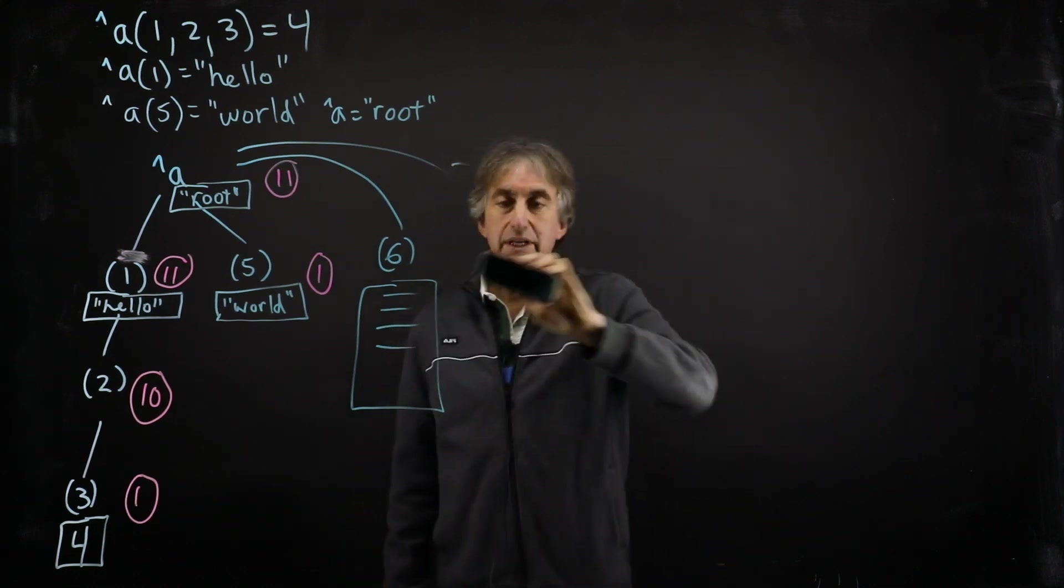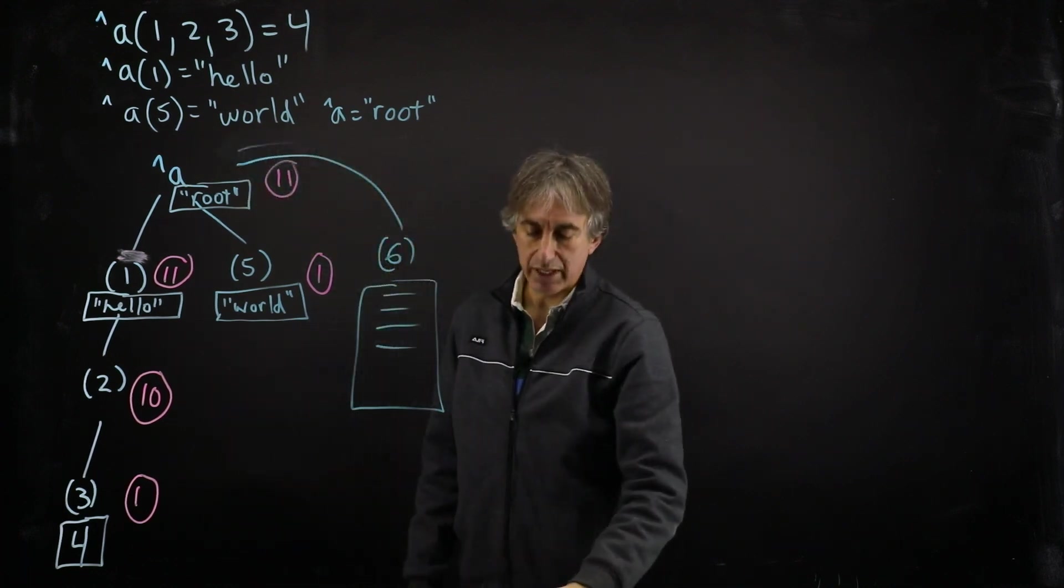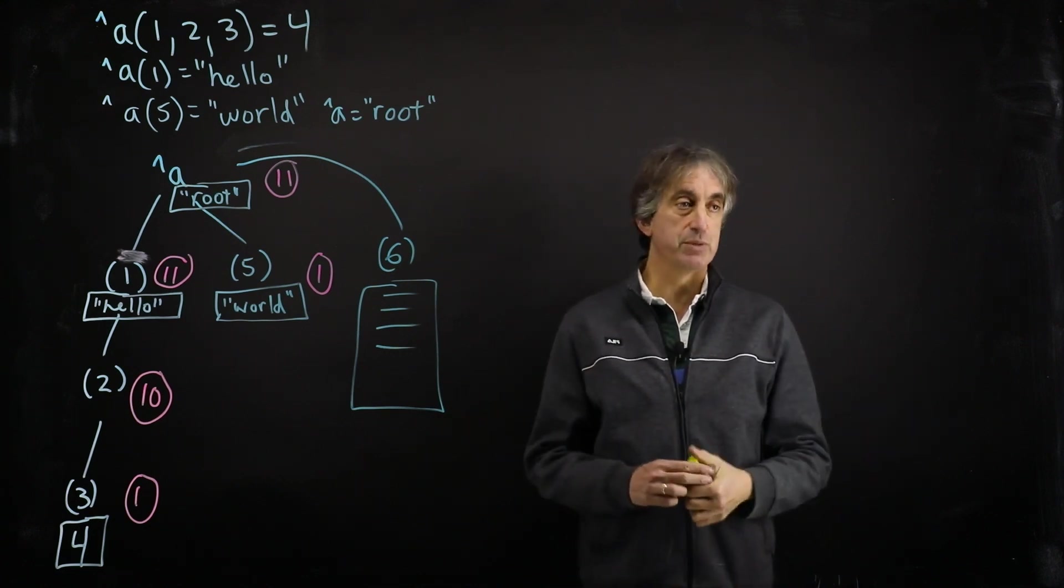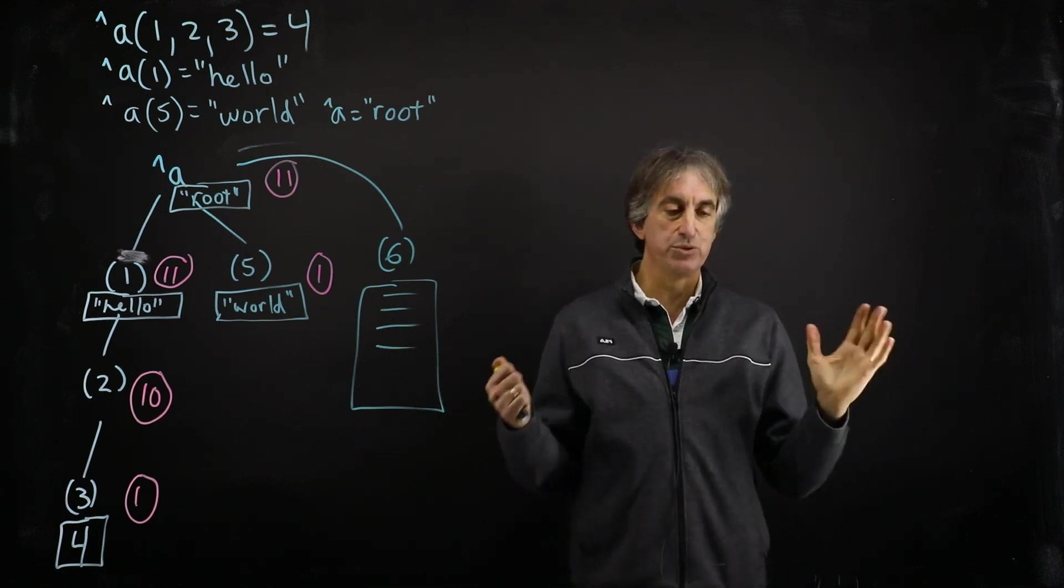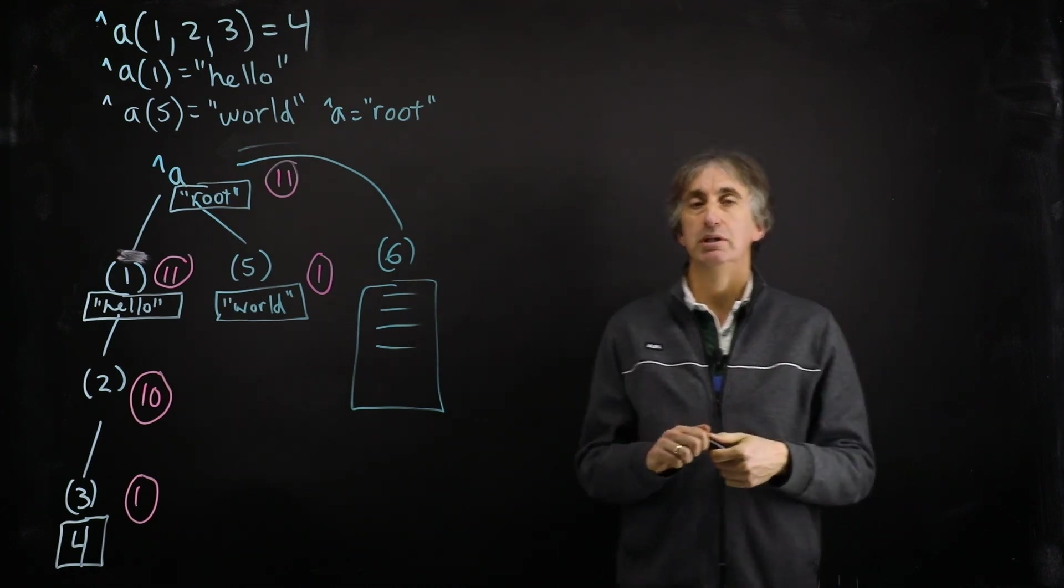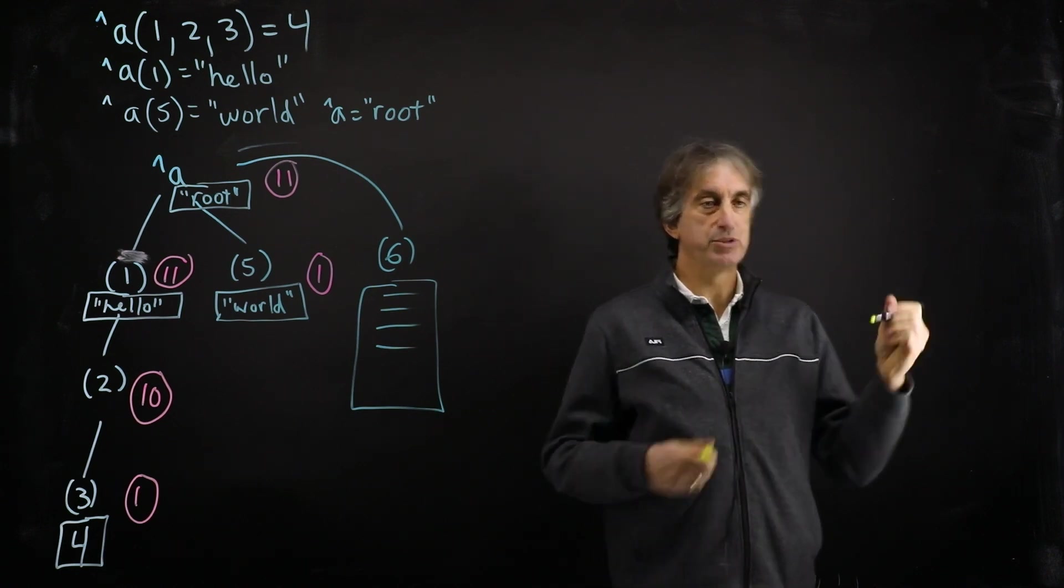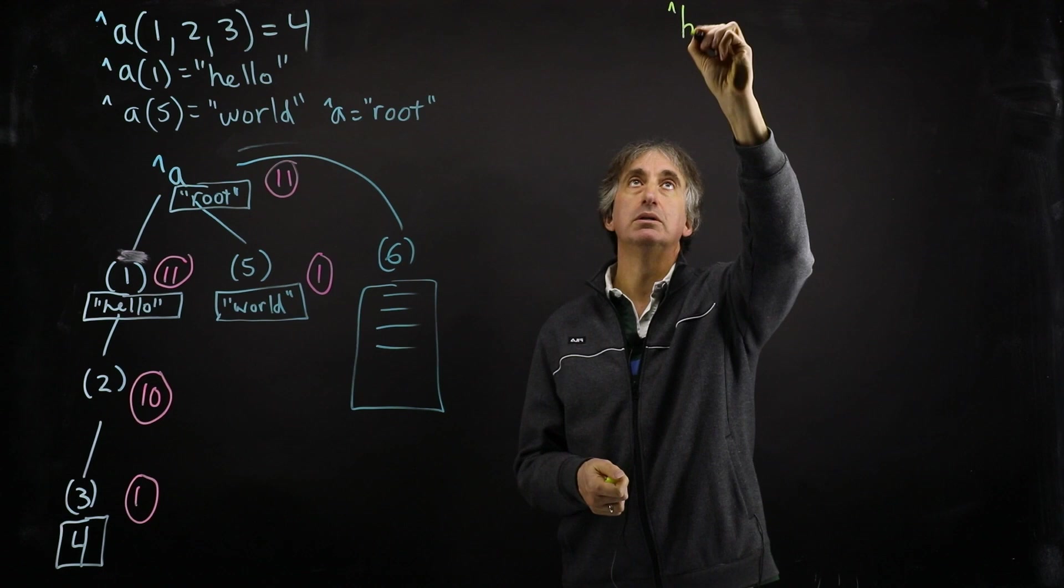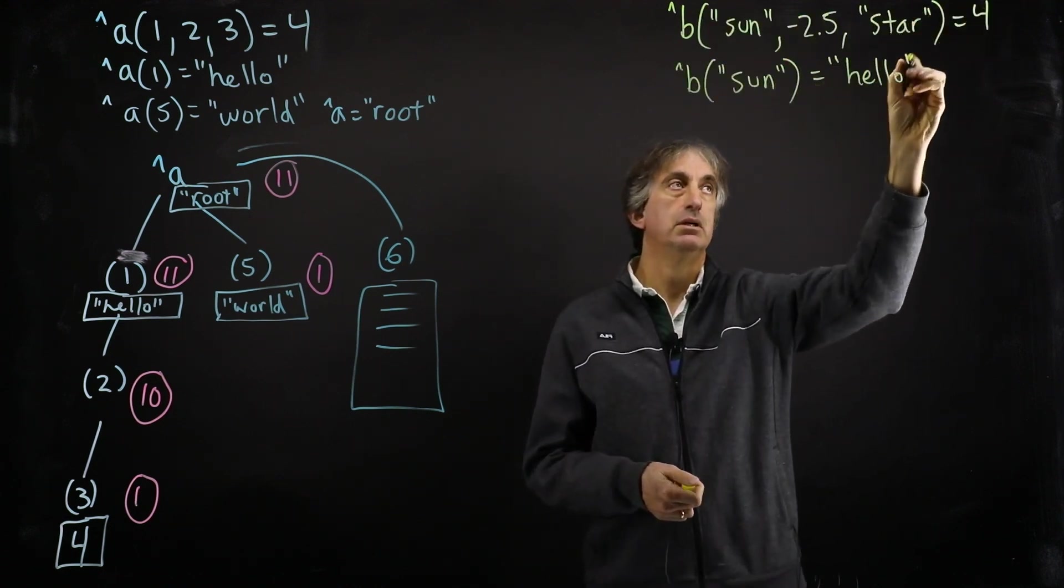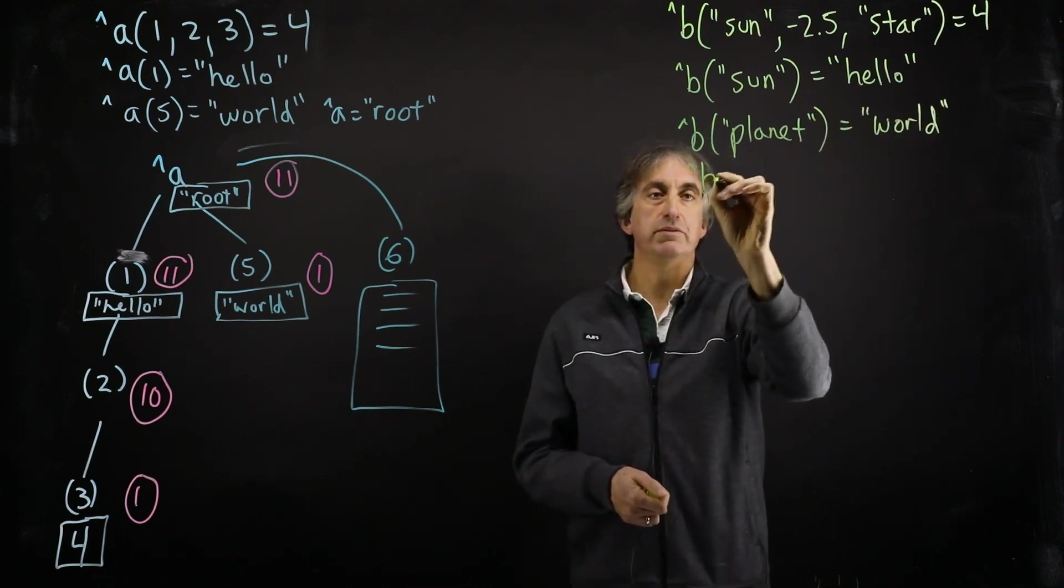Now the flexibility of globals extends to the subscripts. We've been using integer subscripts, but you can use non-integer subscripts, strings, floating point numbers, negative numbers, whatever you want. So I'm going to draw a different global, global B, that uses non-integer subscripts. Again, random example here.